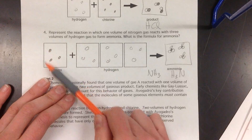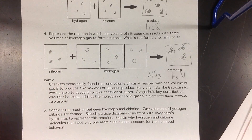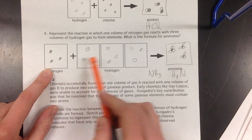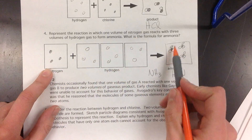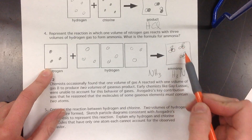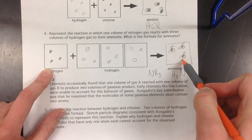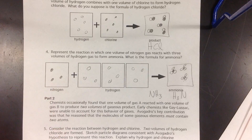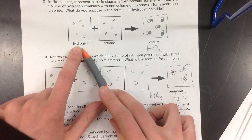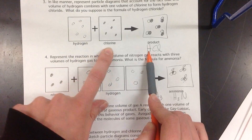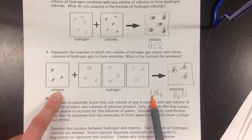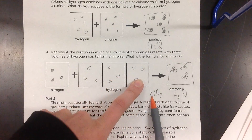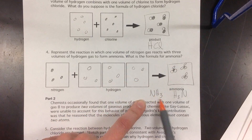Similarly down here, I used three particles this time. Again, it doesn't matter as long as you keep the same number consistent. So three clumps, three clumps, three clumps — one from each box would give me a dark circle with three open circles, and I would have three of those clumps in my product. If I was to write the formula for these: one volume hydrogen, one volume chlorine gives one hydrogen one chlorine — HCl. And one nitrogen with three volumes of hydrogen gives NH₃.